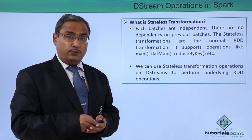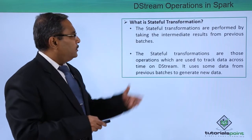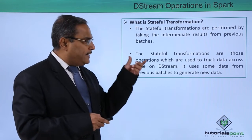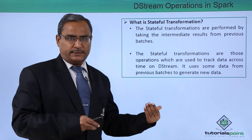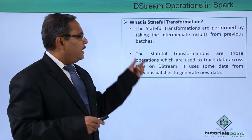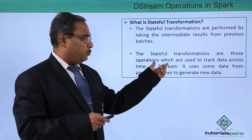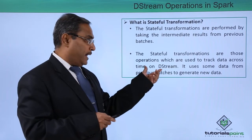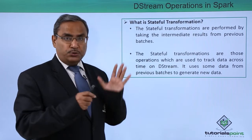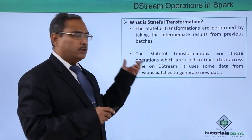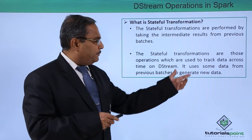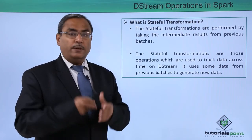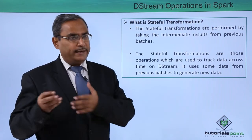We can use stateless transformation operations on DStream to perform underlying RDD operations. Now, what is stateful transformation? The stateful transformations are performed by taking the intermediate results from the previous batches, meaning they have some dependency. Stateful transformations are those operations which are used to track data across time on DStream. They use data from the previous batches to generate new data, which might be the final output or the input for the next batch.